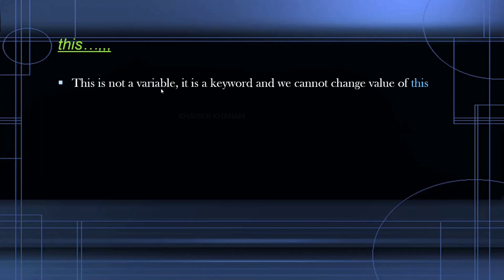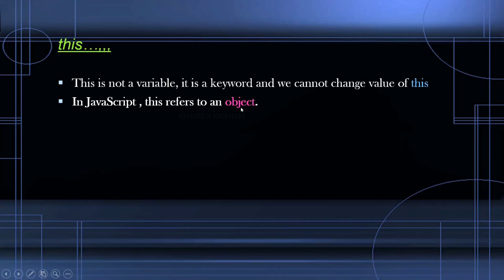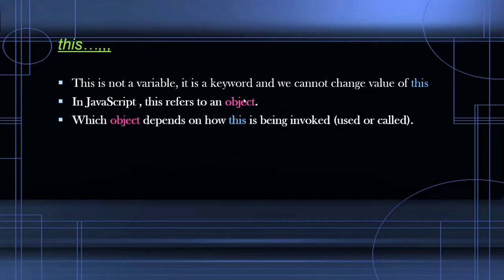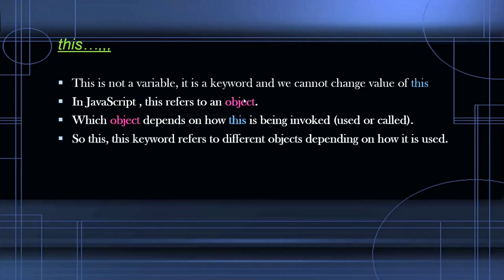You should understand this is not a variable, it is a keyword, and we cannot change the value of this. Keywords in JavaScript cannot be changed — they are fixed. In JavaScript, this refers to an object, because in JavaScript almost everything is an object. Which object it refers to depends on the value and where this is defined — this keyword will be referring to different objects depending on how it is used.